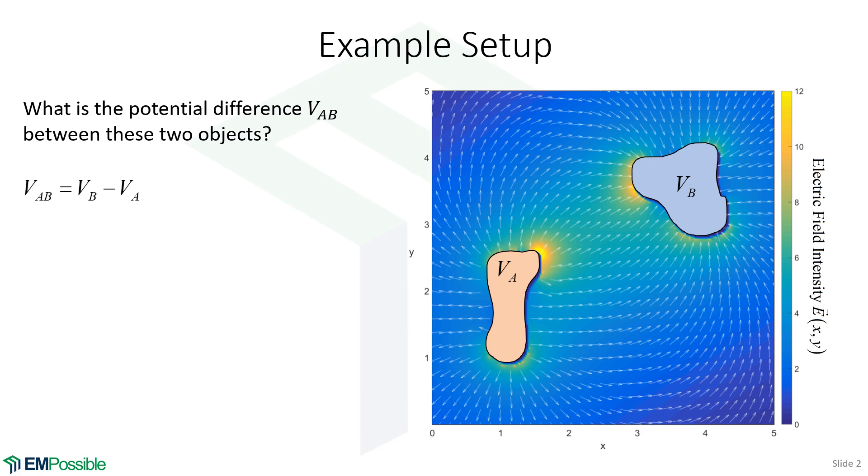And given that, the question here is: what is the potential difference between these two objects? So V_AB, what is that?